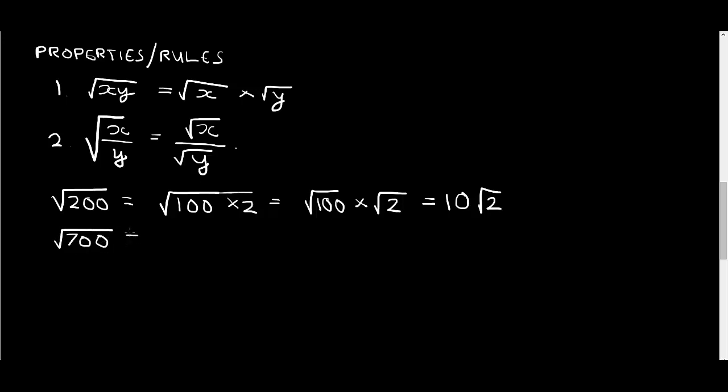Very similarly, root 700 gives us root 100 times 7, which of course is root 100 times root 7. Now, root 100 is 10, so that gives us 10 times root 7.